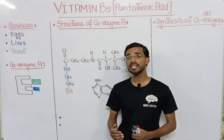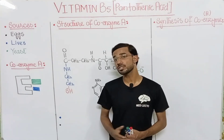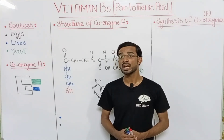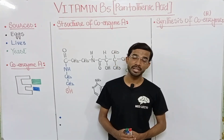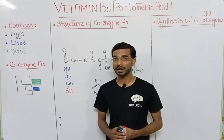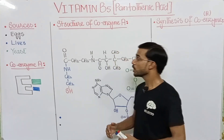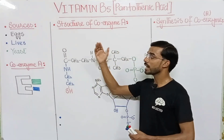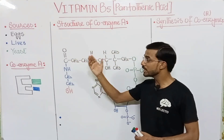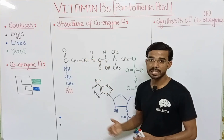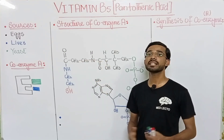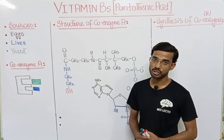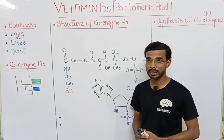So it means that water-soluble vitamins cause toxicity rarely as compared to fat-soluble vitamins. If we look at the different sources of vitamin B5 or pantothenic acid, you can see eggs, liver, and yeast. These are basically the major sources of vitamin B5.